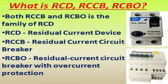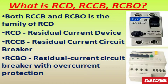Welcome to Gen in Papadia. In this video, I explain what RCD, RCCB, and RCBO are and how they work. Generally, RCD is a current-operated device, while ELCB is a voltage-operated device. Both RCCB and RCBO are part of the RCD family. RCD means residual current device, RCCB means residual current circuit breaker, and RCBO means residual current circuit breaker with over-current protection.